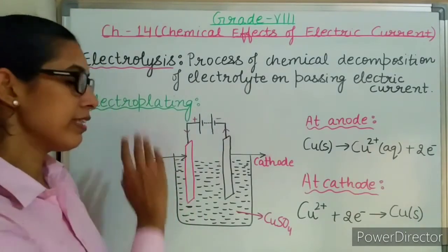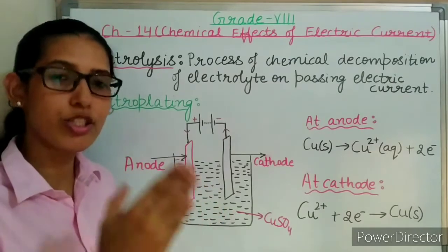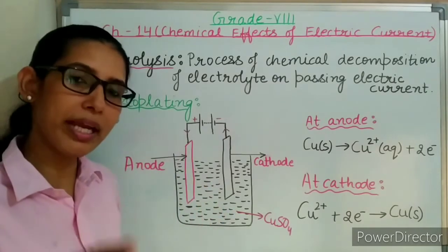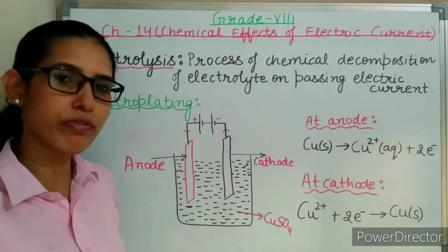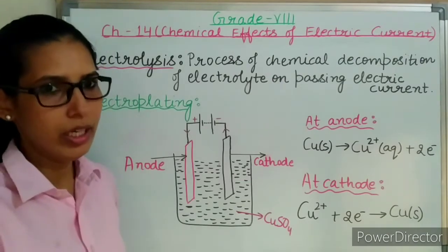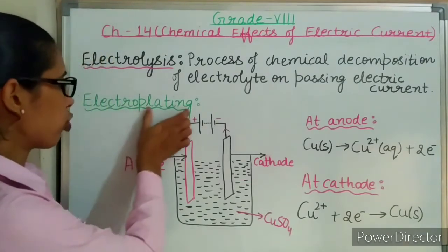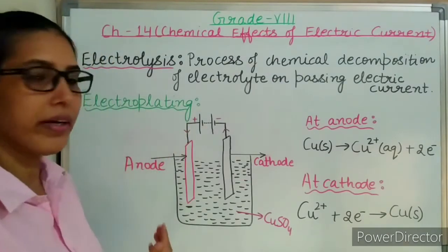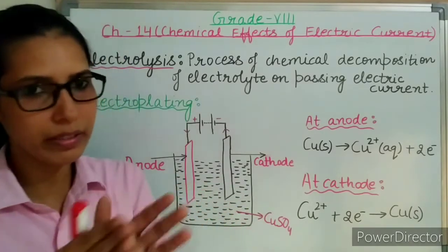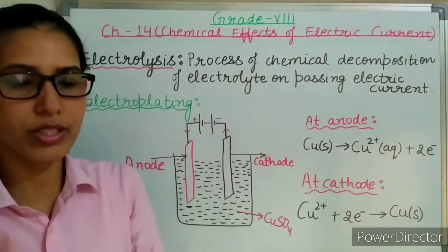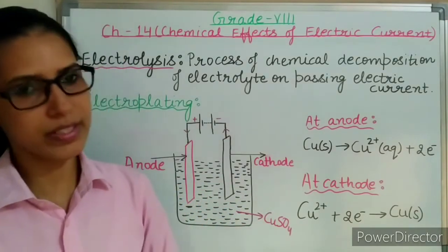Electroplating is the process in which a desired metal is deposited on another material by means of electricity. The deposition of any desired metal on any other material is done with the help of electricity.